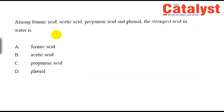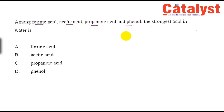The next question is about acidity of organic acids. The question involves formic acid, acetic acid, propanoic acid, and phenol. We need to find which is the most acidic when dissolved in water.